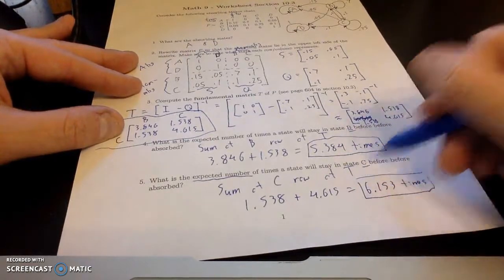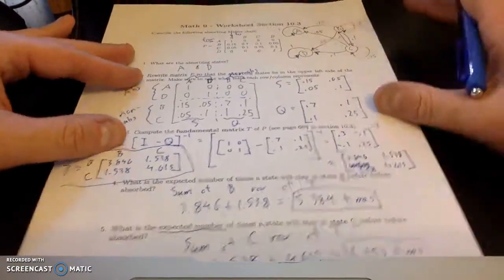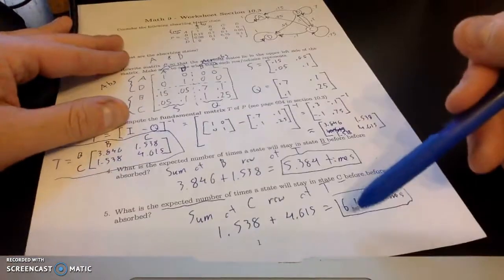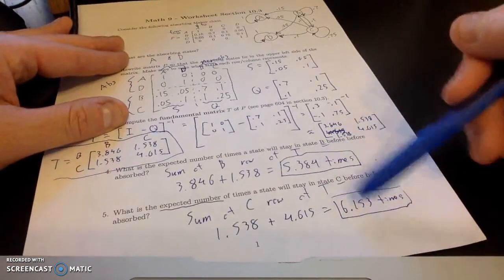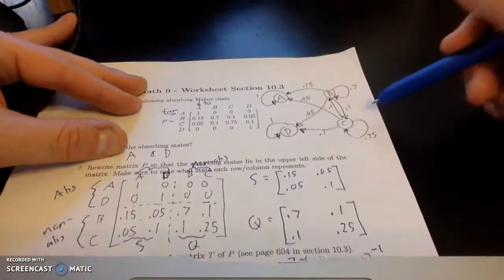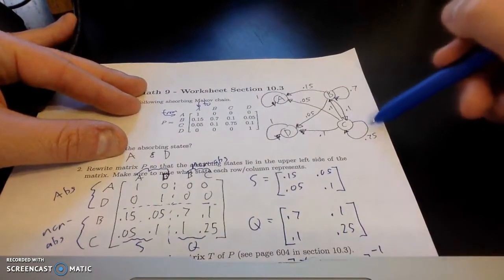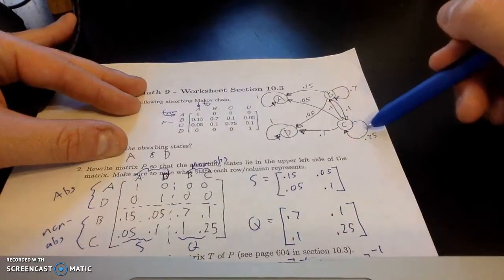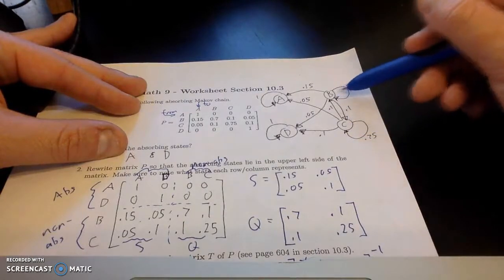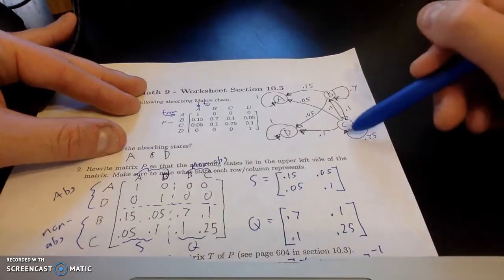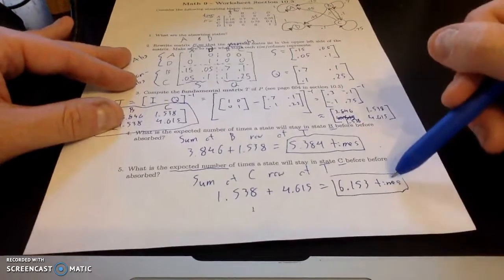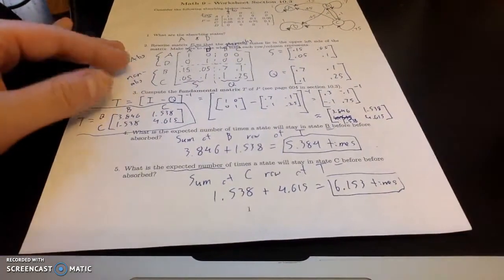So the idea is if we start in state C, this has a slightly higher rate where it's going to stay in C. And if you notice right here, there's a 75% chance that it will stay in state C versus only a 70% chance. So to me that kind of makes sense why there's a higher number for the expected value for state C.